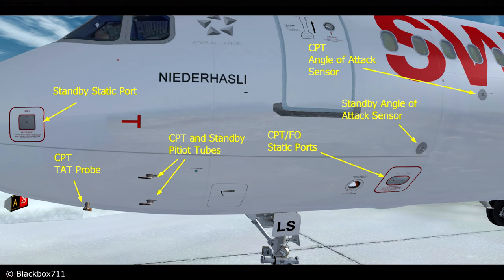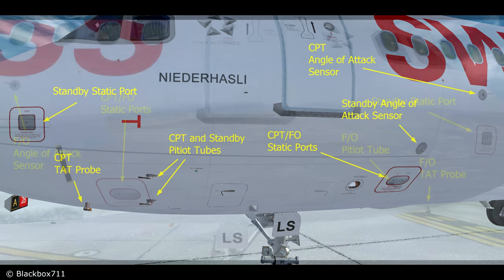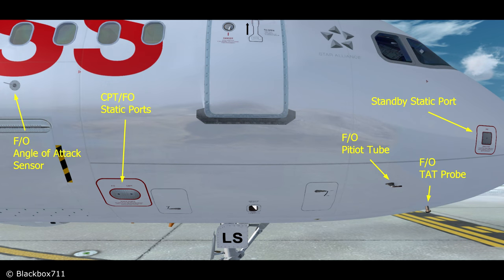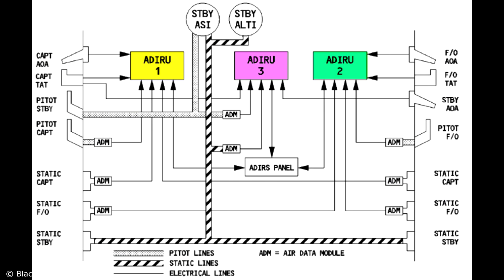For those of you who want more detailed information regarding the probes, have a look at this picture. Since these systems are so vital, you have many redundant probes all spread around the front of the fuselage. On the left hand side you have a lot of probes for the captain's instruments and on the right hand side for the first officer's instruments. The next picture shows how the different probes are connected to the three ADIRUs.